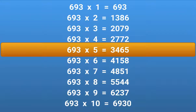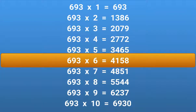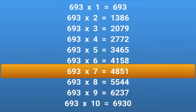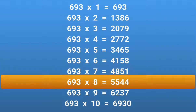693 × 5 = 3465. 693 × 6 = 4158. 693 × 7 = 4851. 693 × 8 = 5544.